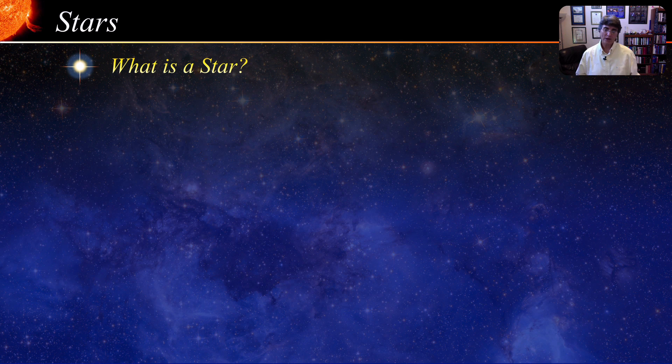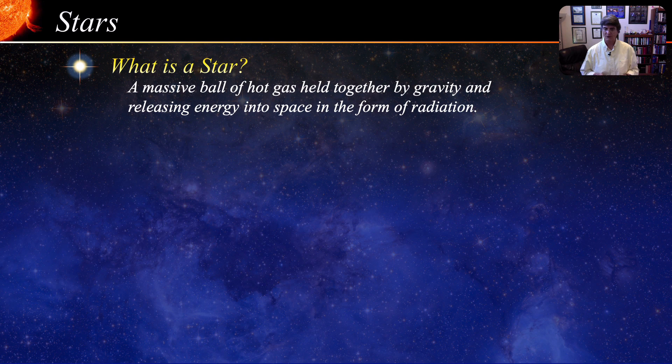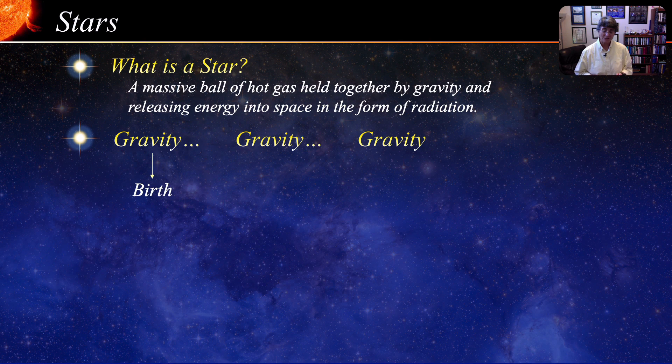So, what is a star? A star is a massive, self-luminous ball of hot gas that is held together by gravity and releasing energy into space in the form of radiation. If in real estate the three key words are location, location, location — for stars, the three key words are gravity, gravity, and gravity. It is by gravity that a star is born; during their lifetime they are continually struggling against gravity; and gravity is finally responsible for their death.